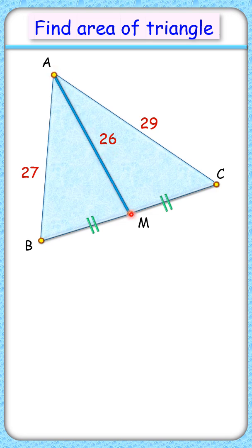Here median AM is dividing triangle in two parts. Let's rotate the second part clockwise by 180 degrees with point M as the axis.